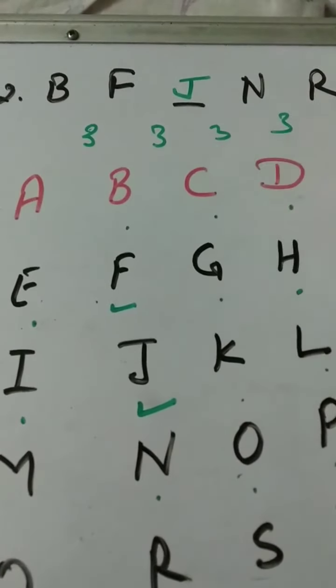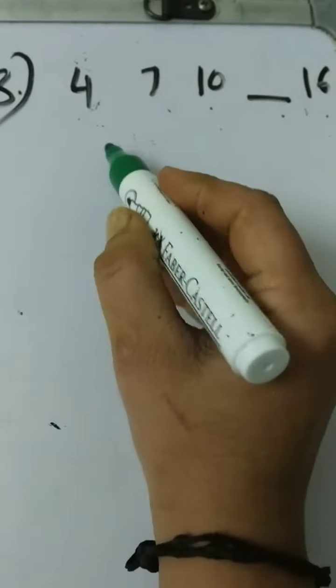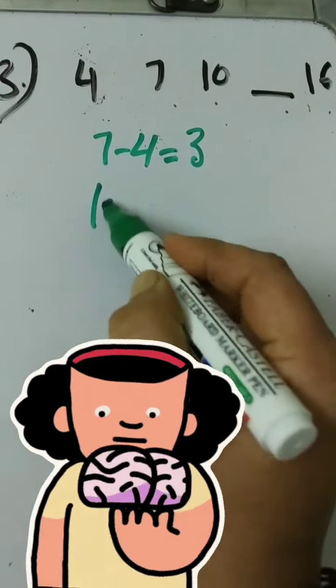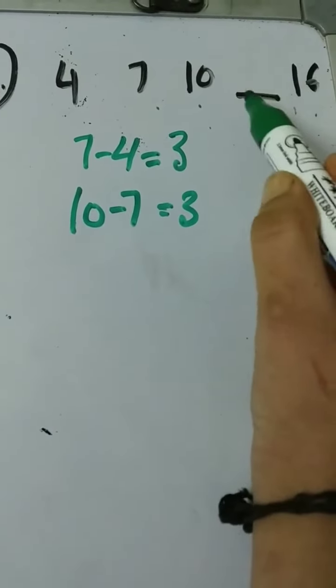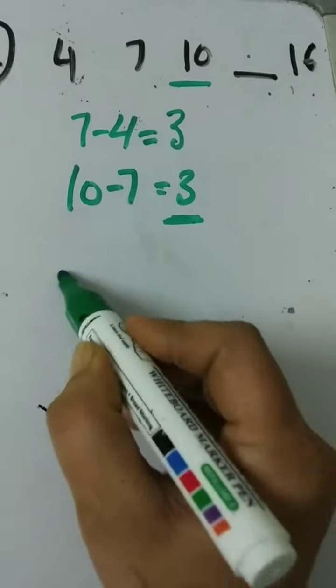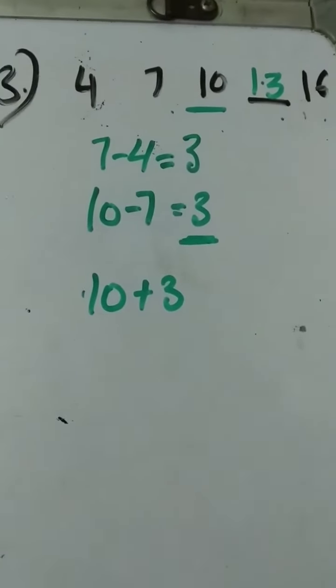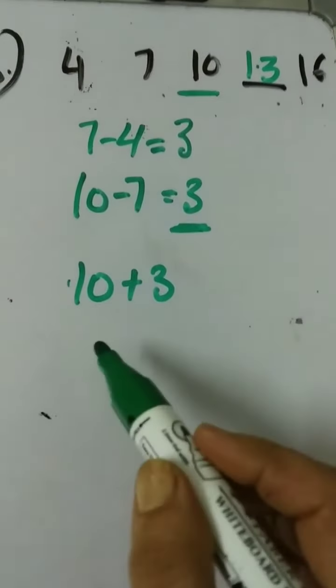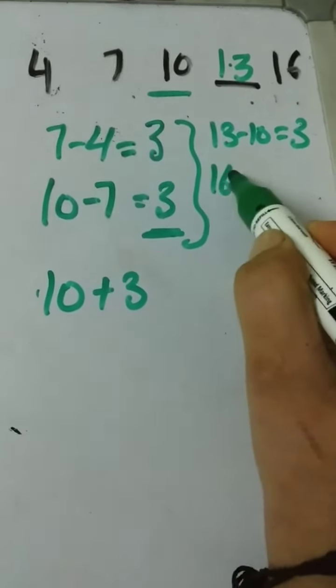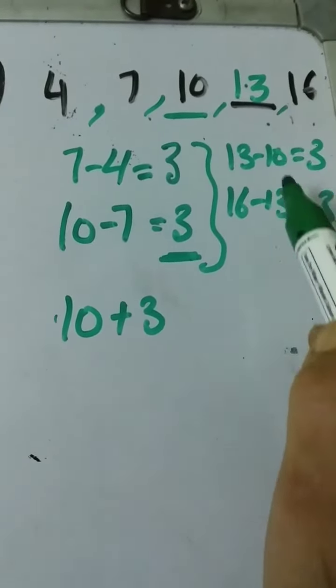In second we will fill J. Third sequence: 4, 7, 10, dash, 16. 7 minus 4, what is it? 3. 10 minus 7? 3. It means we will write the number which is more than 10 with 3 numbers—that means 10 plus 3 equals 13. So in fourth fill up, which number will come? 13. If you see once again, same like this: 13 minus 10, then 16 minus 13—3. Each number in this sequence has a difference of 3.